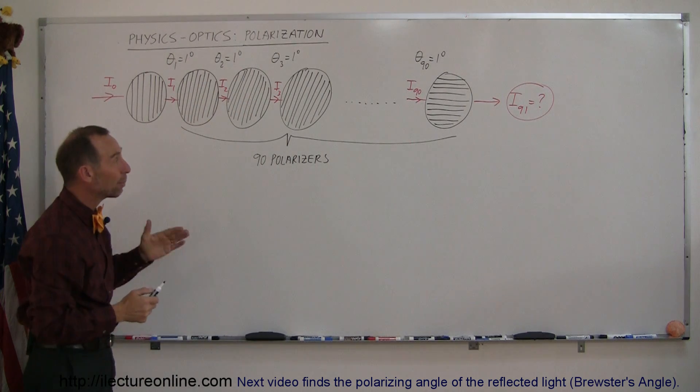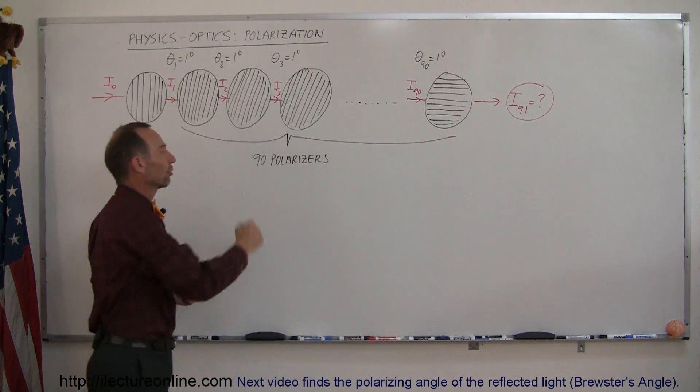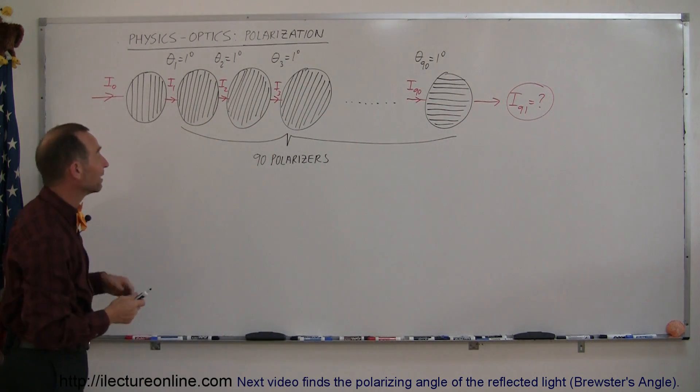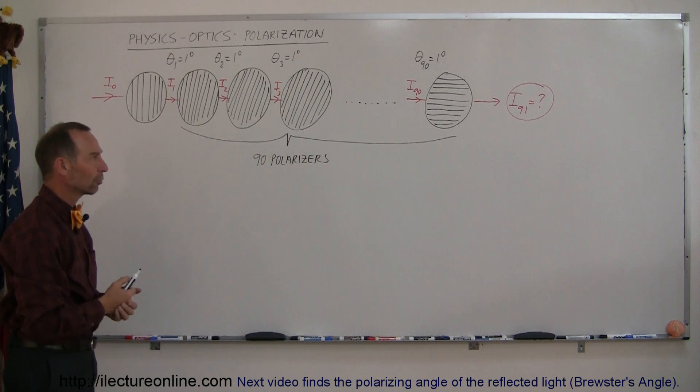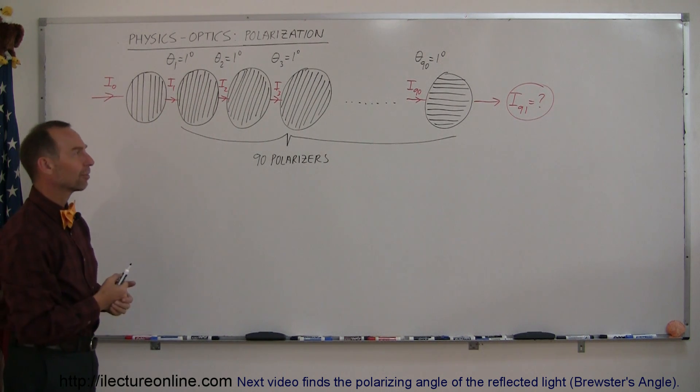So you need a total of 90 polarizers until the last one of the 90 is completely perpendicular compared to the first one. Of course in total we have a total of 91 polarizers including the first one. So what is the intensity of the light making it through that last polarizer?